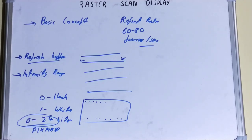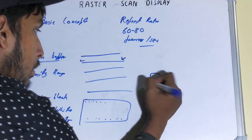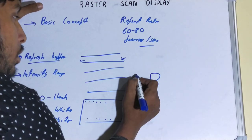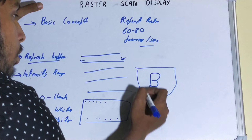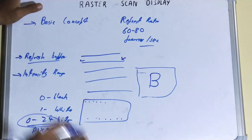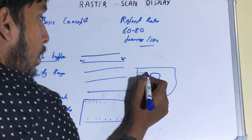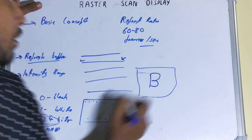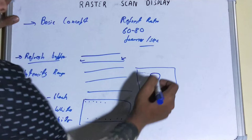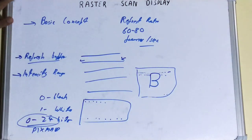Now let's see how a character is displayed using raster scan display. For example, if you want to display the letter 'B' on screen, the electron beam starts from the top-left corner. It sets intensity off where nothing needs to be shown. Once it reaches the part where 'B' is, it sets the intensity value to one. Then off again — and this is how it scans from left to right to display the particular character or picture.